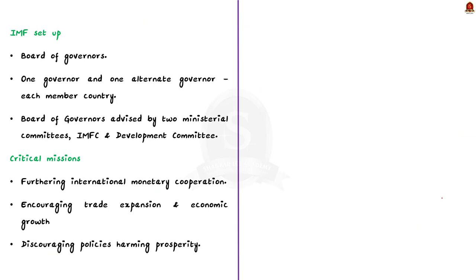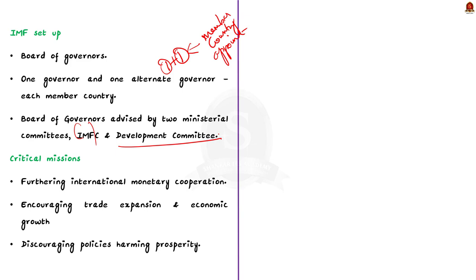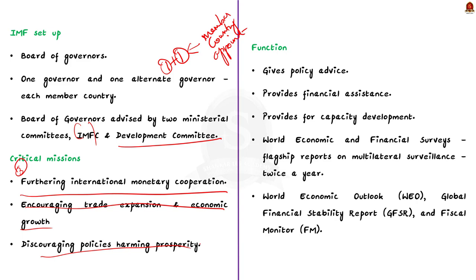When we take the institutional setup of IMF, it has a Board of Governors consisting of one governor and one alternative governor for each member country. The Board of Governors is advised by two ministerial committees: the International Monetary and Financial Committee, IMFC, and the Development Committee. IMF has three critical missions: furthering international monetary cooperation, encouraging the expansion of trade and economic growth, and discouraging policies that would harm prosperity. To fulfill these missions, IMF member countries work collaboratively with each other and with other international bodies.